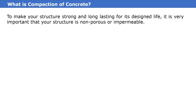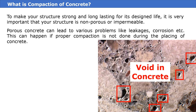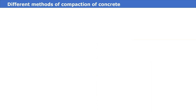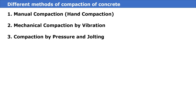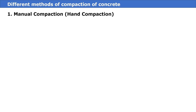To make your structure strong and long-lasting for its designed life, it is very important that your structure is non-porous and impermeable. Porous concrete can lead to various problems like leakages, corrosion, etc. This can happen if proper compaction is not done during the placing of concrete. The different methods of compaction of concrete are: first, manual compaction or hand compaction; second, mechanical compaction by vibration; third, compaction by pressure and jolting; fourth, compaction by spinning.